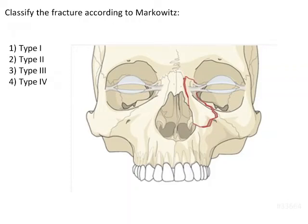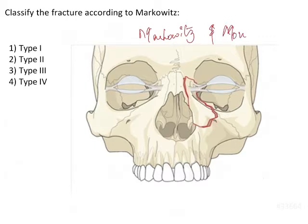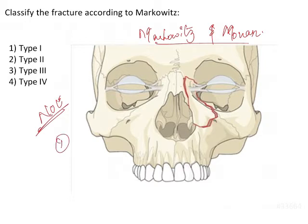The question is to classify the fracture according to Markowitz. Markowitz and Monin are two people who classified nasoorbitoethmoidal fractures based on three criteria. The first and most important of these criteria was the medial canthal ligament — specifically, the attachment of the medial canthal ligament.